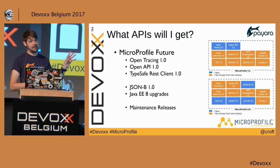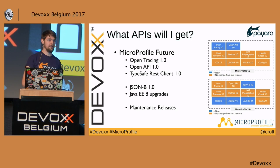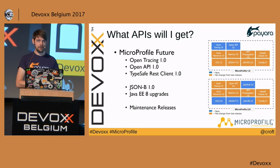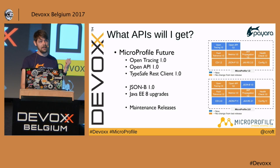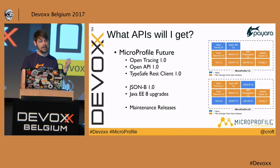MicroProfile is a time-boxed release, so if APIs aren't ready they'll be pushed to the next release. MicroProfile 2.0 will bump up the versions of all Java EE 8-inherited specs and fold in the JSON-B spec — that's already been agreed, with a current target of Q1 next year. Maintenance releases will also fix TCK or spec document issues like typos.